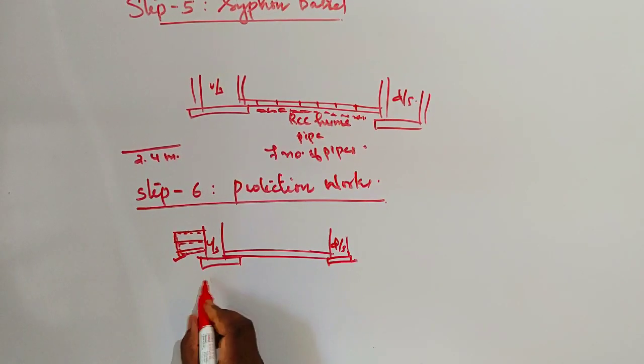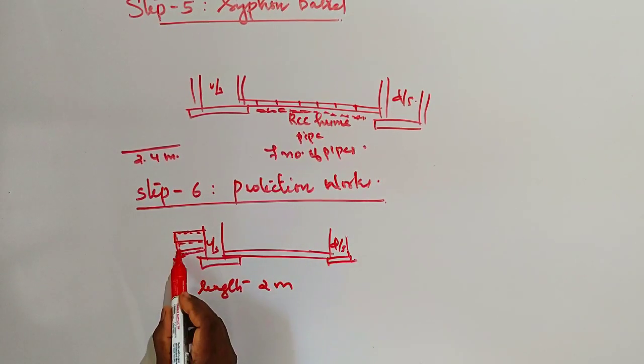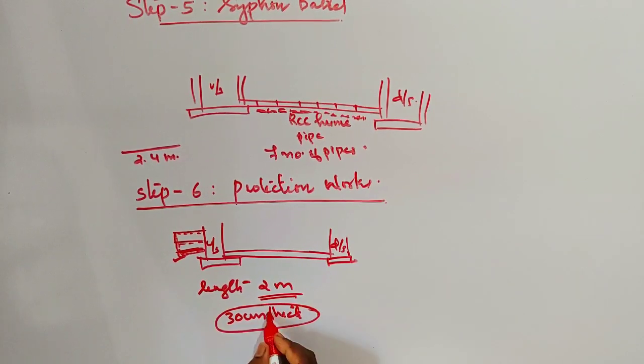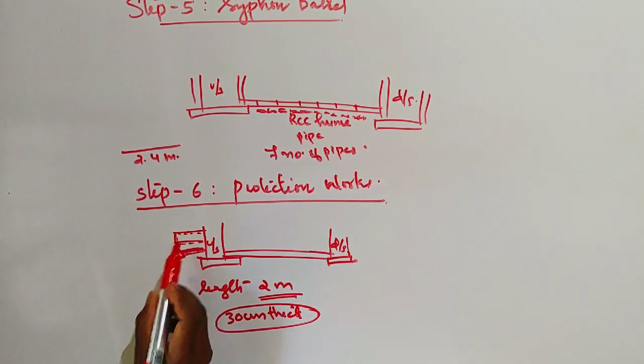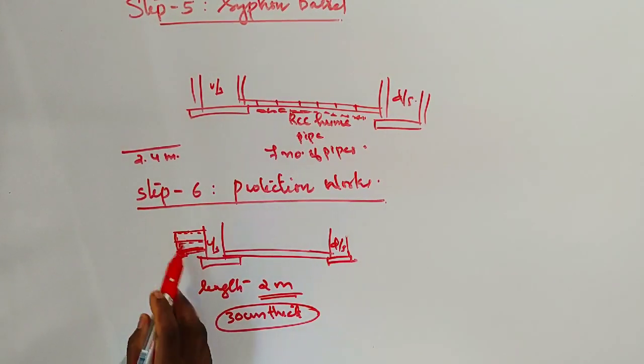For the apron dimensions, the length is 2 meters and the thickness is 30 centimeters.